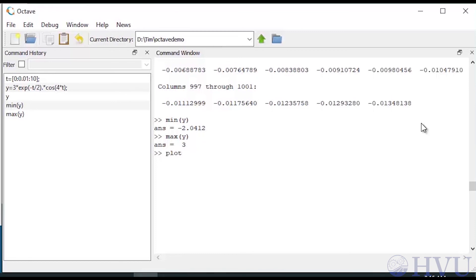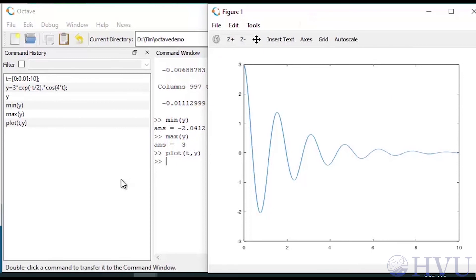So, type PLOT so the time data in the vector t is on the horizontal axis and the y data is on the vertical axis. Pretty cool and easy, right? I'll talk more about plotting in our next video.